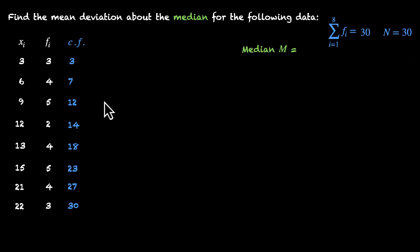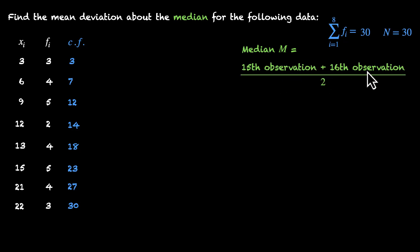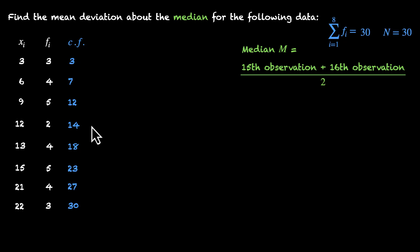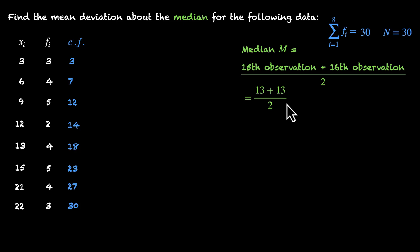The median is the value in the middle. With 30 entries lined in increasing order, the middle value is the average of the 15th and 16th observations. Now let's figure out where those observations fall using cumulative frequencies. The first 14 observations go up to Xi = 12. The next four observations are all 13, so the 15th, 16th, 17th, and 18th are all equal to 13. So the median is (13 + 13) / 2 = 13.